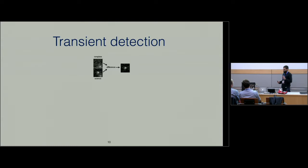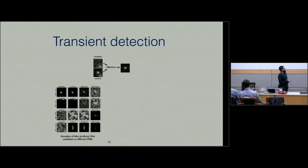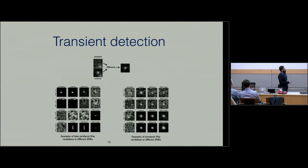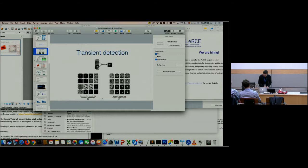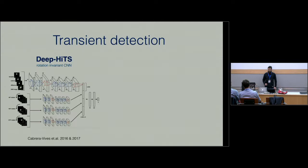One of the things we started doing was transient detection. This happened when we were in 2013 working on the HiTS survey. We have a template image and a science image. We produce an inference image and we want to see if that's a real transient or not. We had fake transients from the data and we simulated real transients just by adding a star in the image.